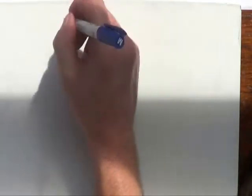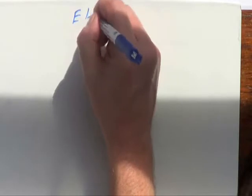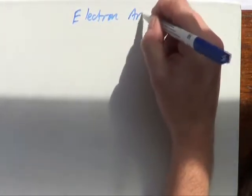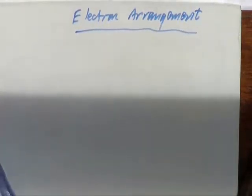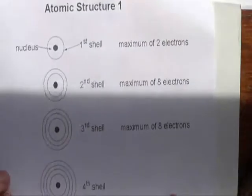So that's how you work out the number of protons, neutrons, and electrons, and how you deal with positive or negative charges on an atom or ion. This time, what we're going to do is have a look at some data that the examiner may give you, from which you'd be expected to identify what the element or atom actually is.